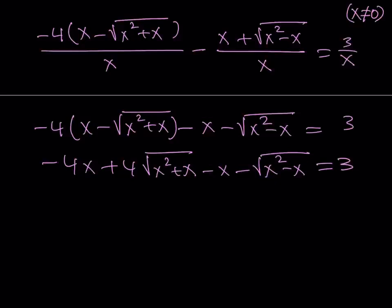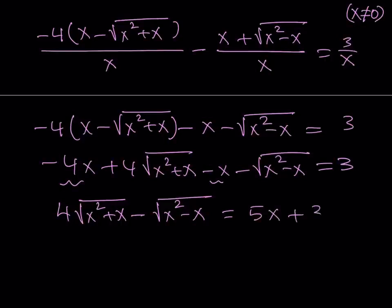So here, I'm going to be getting something like this: 4 times the square root of x squared plus x minus square root of x squared minus x. Negative 4x minus x is going to give me negative 5x. If I add both sides, then we'll have 5x plus 3.